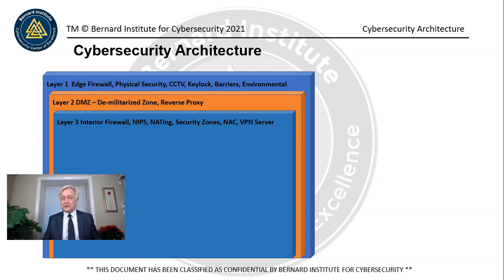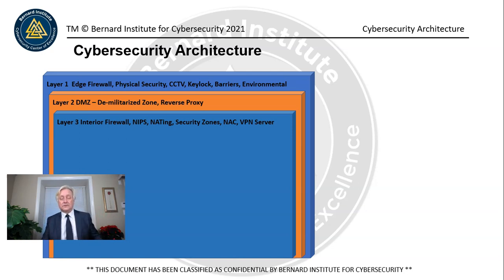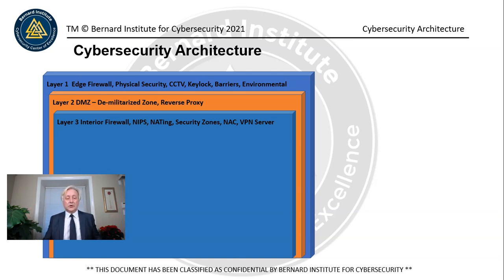We also have network access control systems. These allow you to register pre-authorized devices that connect to your network, so anyone who tries to plug in or connect via Wi-Fi without authorization will be rejected automatically. Then there's VPN — virtual private networking — which creates an encrypted tunnel over the Internet from one location to another. We place it behind the second firewall so that it can't be hacked.